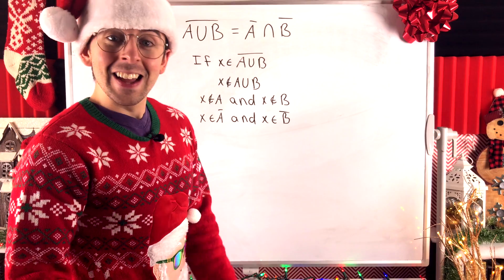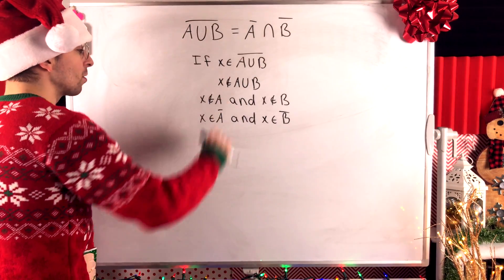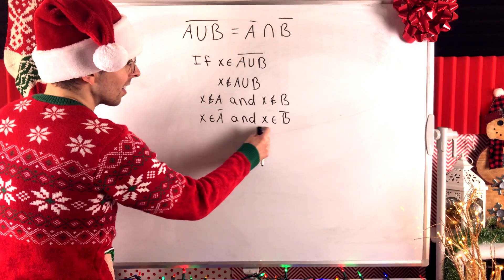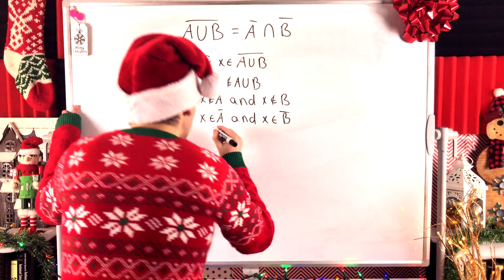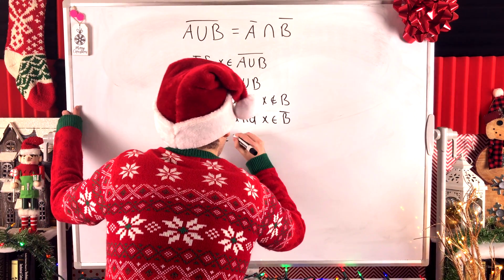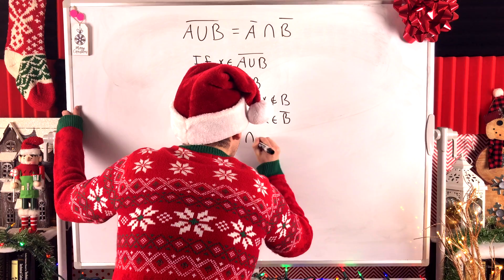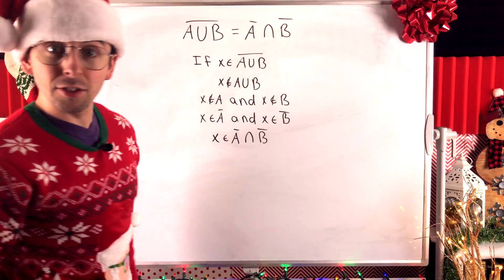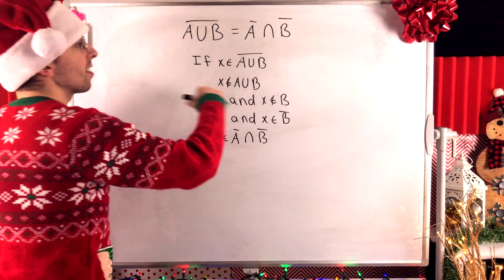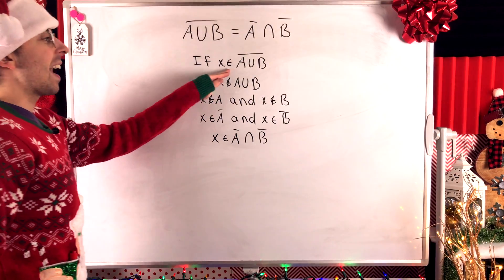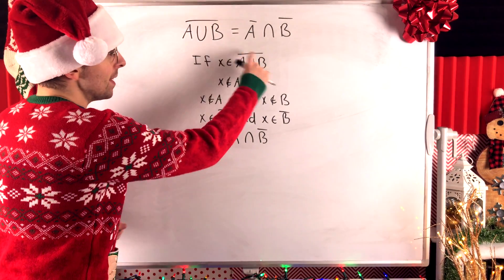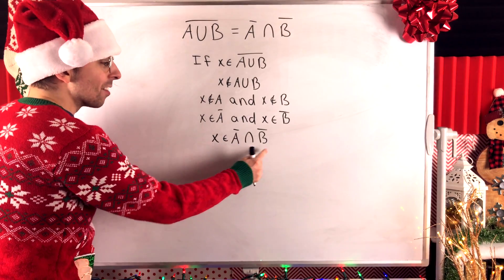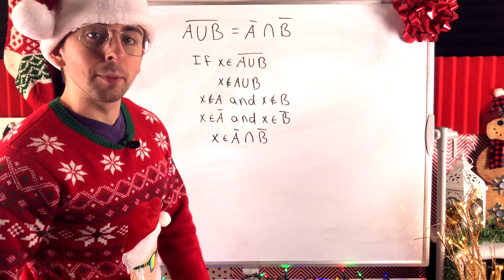By definition of set intersection, if x is an element of A complement and x is an element of B complement, then x is an element of A complement intersect B complement. So we've shown that the complement of A union B is a subset of A complement intersect B complement — any element from the complement of A union B must also be in A complement intersected with B complement.